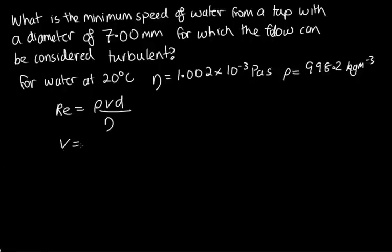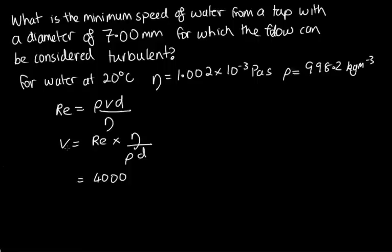We've got that the velocity equals the Reynolds number times the viscosity, divided by the density and the diameter. Now we can substitute everything in — the minimum Reynolds number is 4,000. The viscosity is 1.002 × 10⁻³, the density is 998.2, and the diameter is 7 millimetres, which we can put as 7.00 × 10⁻³.